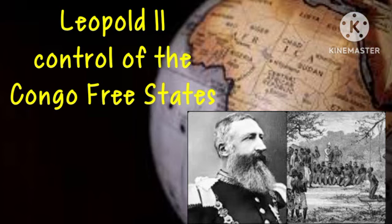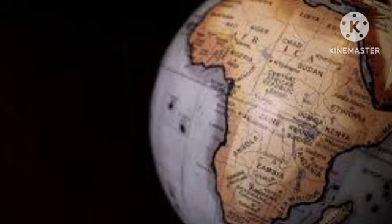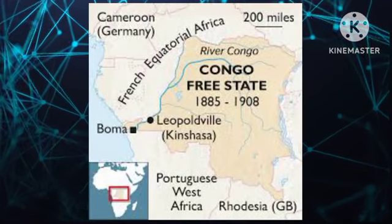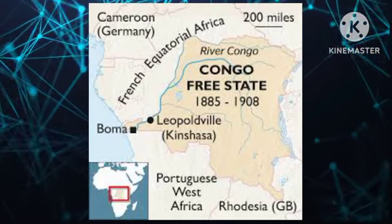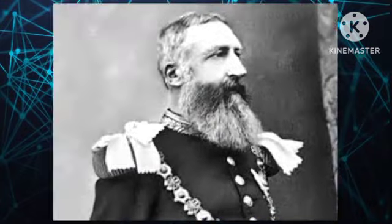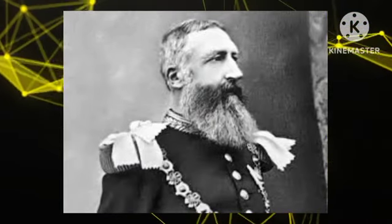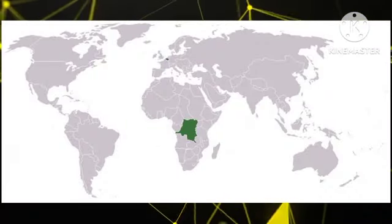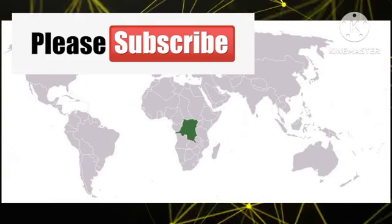From around 1885 to 1909, a part of Africa was placed under the control of an individual European citizen — King Leopold II of Belgium. The territory in question was the Congo Free State, also known as the Independent State of the Congo, which was seen as a private possession owned by King Leopold II. The Congo Free State now comprises a large part of what is known today as the Democratic Republic of the Congo.